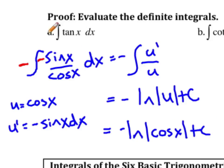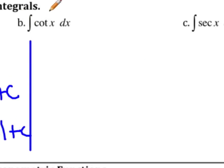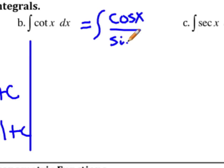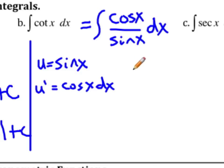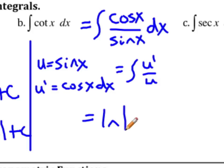So the integral of tangent actually becomes a natural log function. For our next example, the integral of cotangent x dx, we use the same idea: switch it over to the integral of cosine x over sine x dx. We let u equal the denominator, which is sine x, and u' is cosine x dx. Looking at this, we already have it in the form of u' over u, because we have cosine x on top.